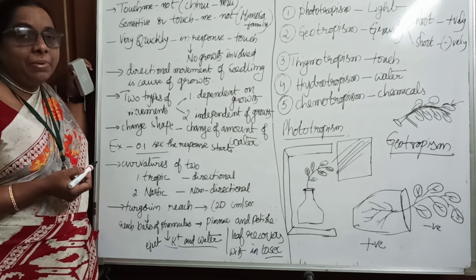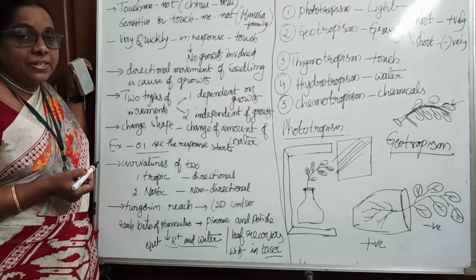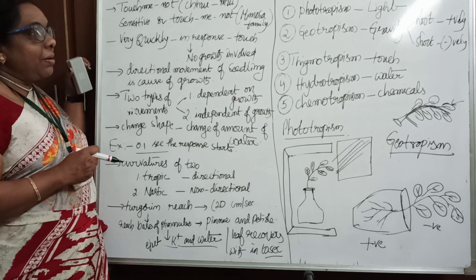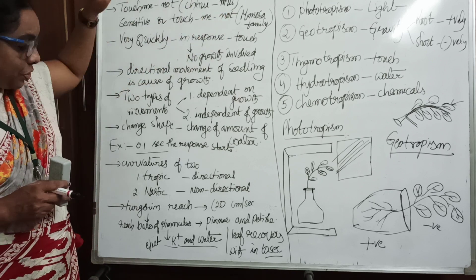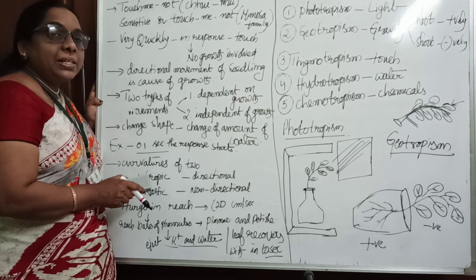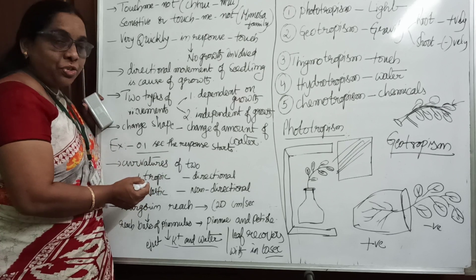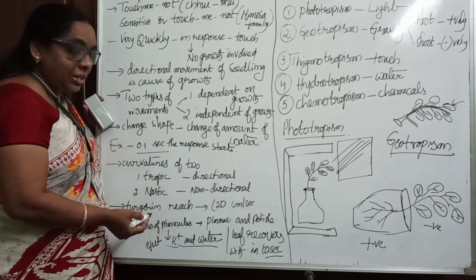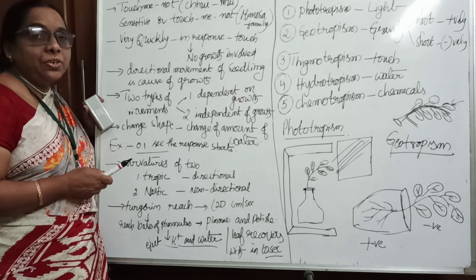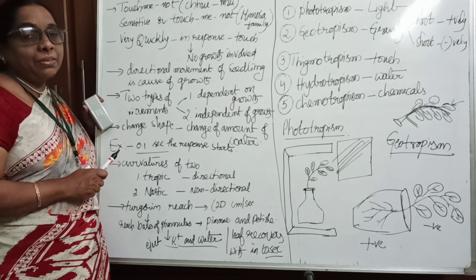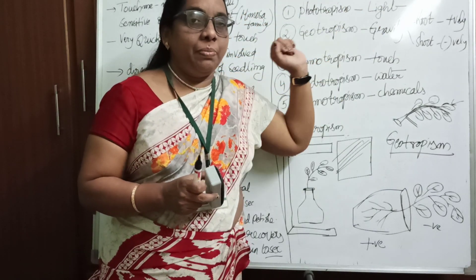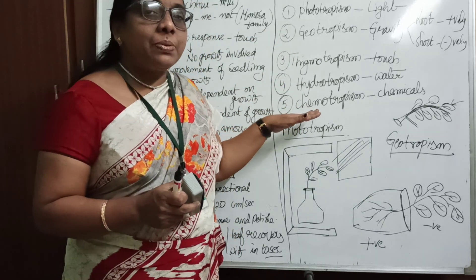These movements are also called curvatures or tropics. There are two types of curvatures: the first is tropic curvatures, which are directional, and the second type is nastic, which is non-directional. In your syllabus, the tropic movements are given. We are going to study five different types of directional tropic movements.